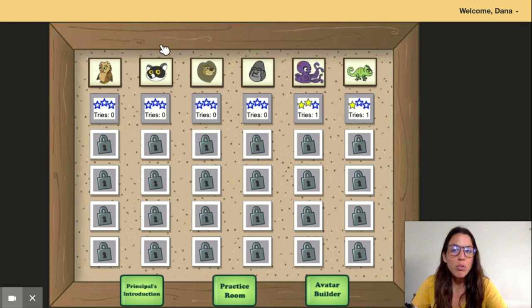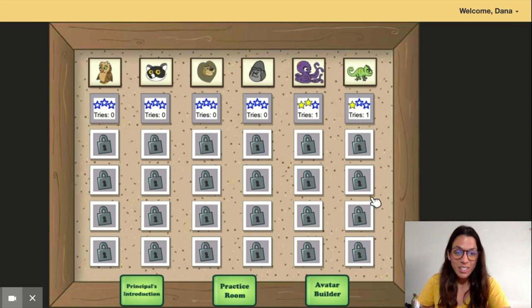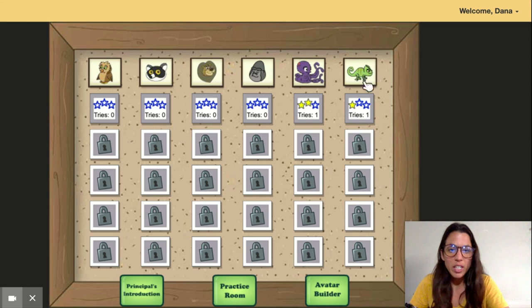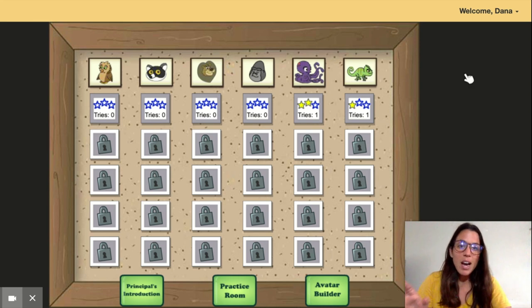Each of these animals represents a different social skill, and all of these levels underneath the animals are locked scenes. The social skills that I primarily focus on are emotional regulation, which is the chameleon, and impulse control, which is this octopus, but they also have communication, social initiation, cooperation, and other good skills in the scenes.